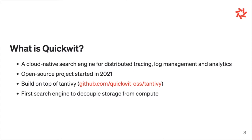QuickWit is built on top of an indexing library called TantivY, which was also created by the founders of QuickWit. It's a library written in Rust, and it's the equivalent in the Rust world of what Lucene is in the Java world. Almost all search engines in the Java world — Elasticsearch, OpenSearch, Solr — are built on top of Lucene. TantivY is the equivalent of Lucene, only written in Rust and on average twice as fast.